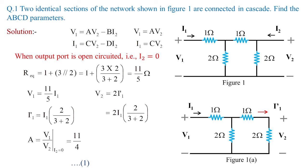Let me treat that as equation 1. Similarly, C equals I1/V2 at the output port open-circuited, whose value is 5/4. Let me treat this as equation 2. We are done with equations 1 and 2 in terms of A and C.